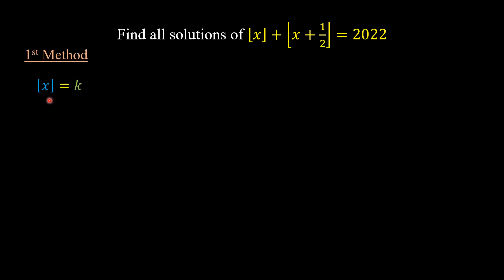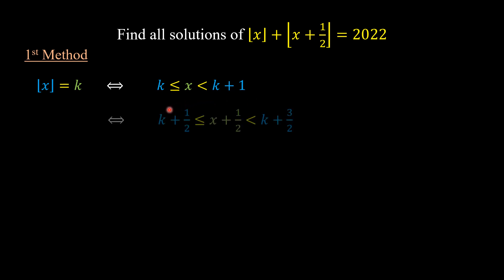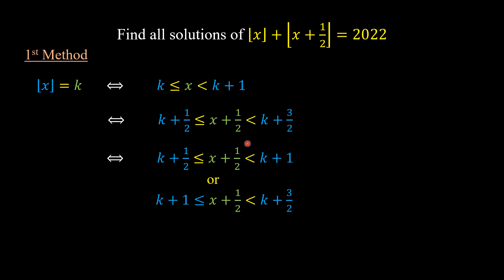By the definition of the floor value of x, we have x is between k and k plus one. Adding one-half, we have x plus one-half is between k plus one-half and k plus three-over-two. We can decompose this interval into two intervals: x plus one-half is between k plus one-half and k plus one, or x plus one-half is between k plus one and k plus three-over-two.